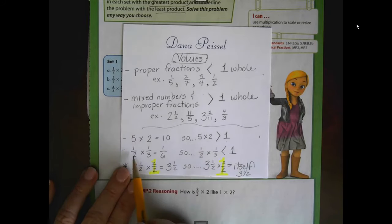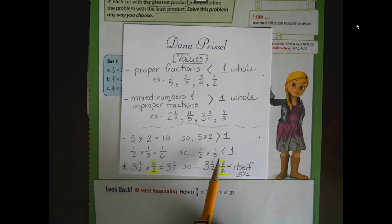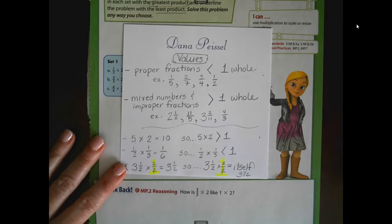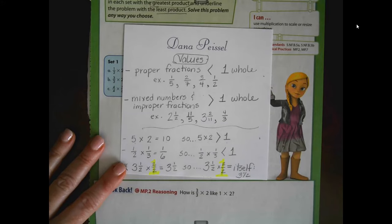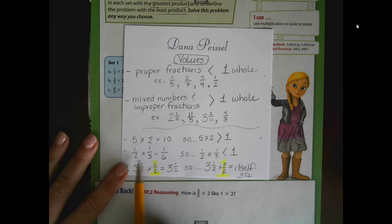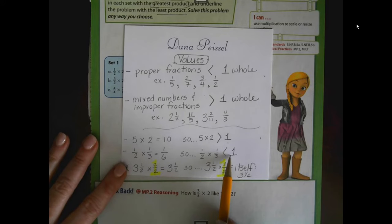If I have two factors that are less than one in value, the product is going to be also less than one in value. If I multiply one-half times one-third, I get one-sixth. Anytime I have two numbers that have a value less than one whole, whether they're fractions or decimals, then the product is going to be less than one whole.